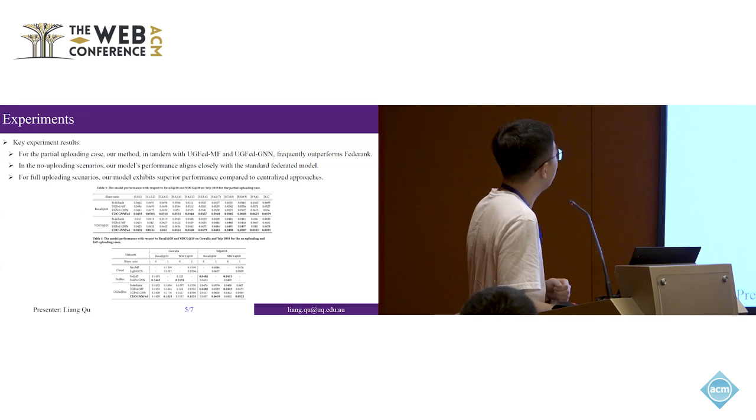We try to simulate real scenarios. We test different share ratios from 0 to 1, with steps of 0.1. We also test two extreme scenarios. When the share ratio is 0, it aligns with traditional federated learning settings. When the share ratio is 1, it aligns with centralized settings.